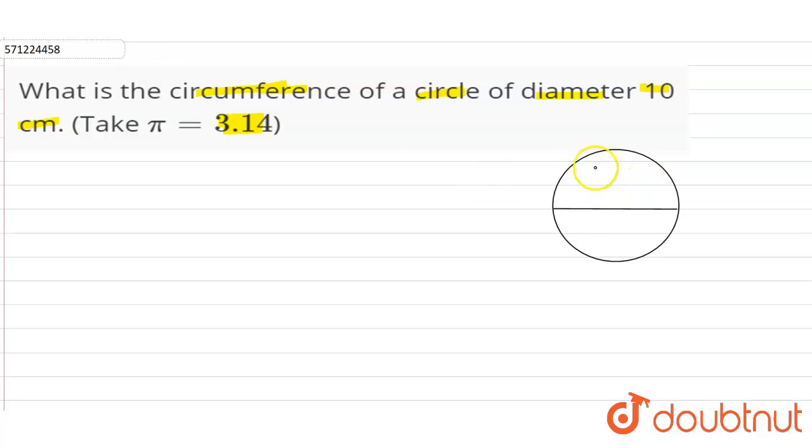So this is the circle and it is given the diameter of the circle is 10 cm. So the formula for finding circumference of circle is 2 pi r.